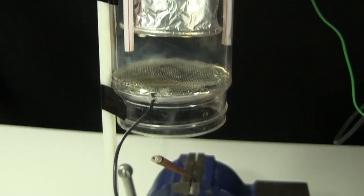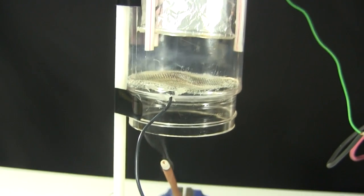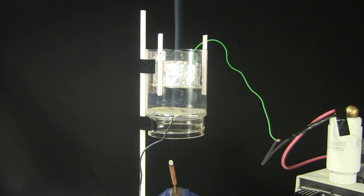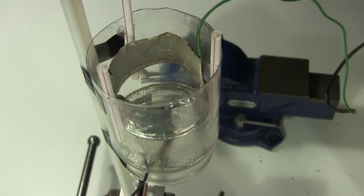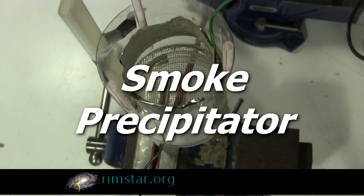Hi gang! This is called a smoke precipitator, or an electrostatic precipitator. When it's turned off, smoke simply flows through it, but when it's turned on, the outlet is clear of any visible smoke. The smoke particles collect on this cylinder instead. I'll show you how it works and how to make one.